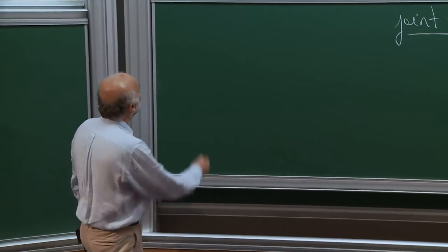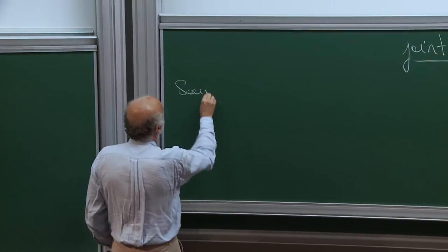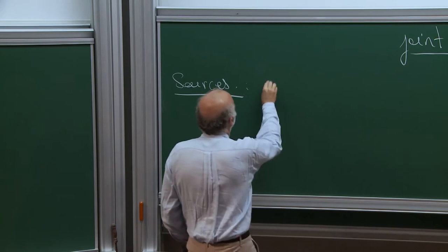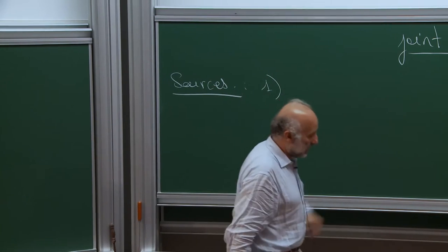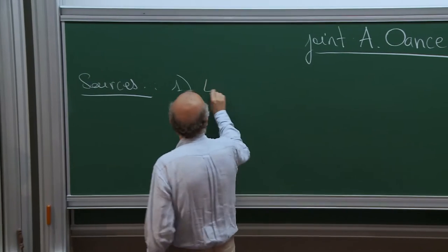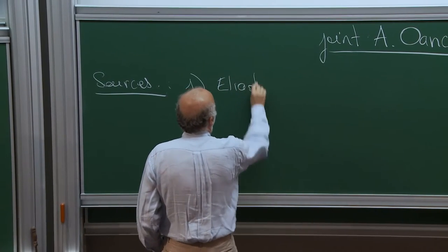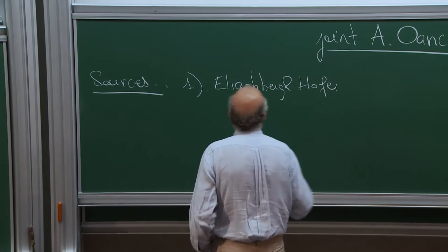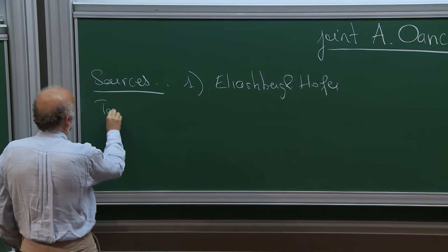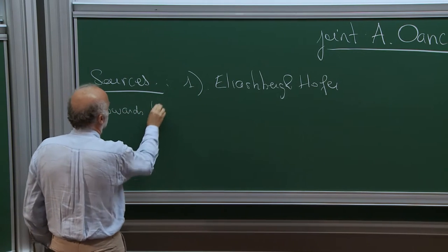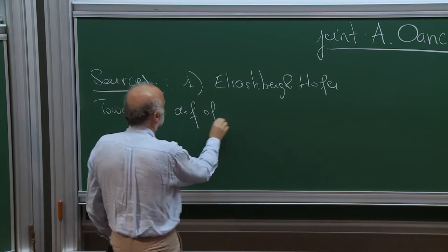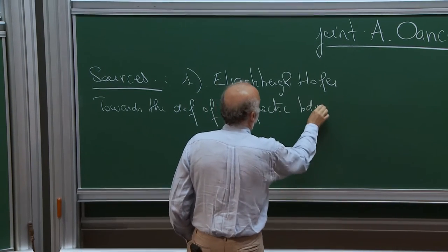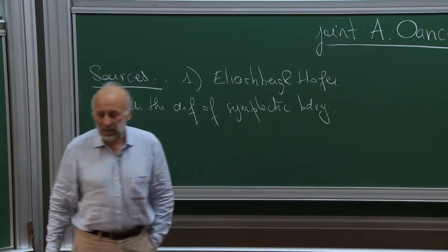So this started with two sources. The first one is a paper by Elie Aschberg and Hofer, which is called 'Towards the Definition of Symplectic Boundary', and which asks the following question.